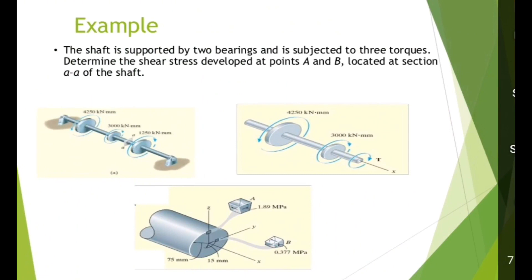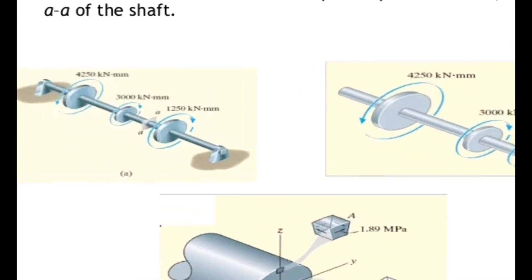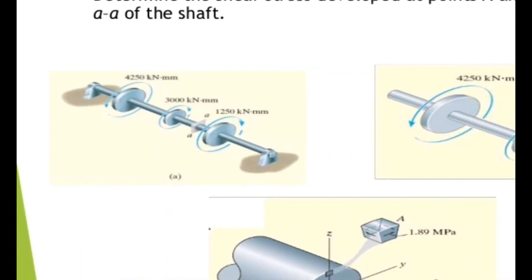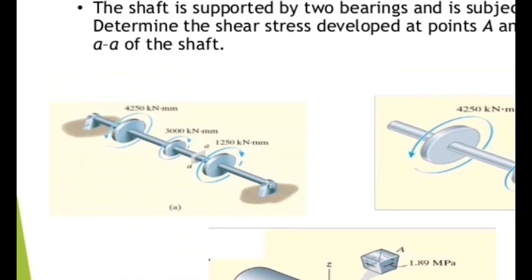Example problem: a shaft is supported by two bearings and subjected to three torques. Determine the shear stress developed at points A and B located at section A-A of the shaft. Three torques are applied as shown in the diagram.